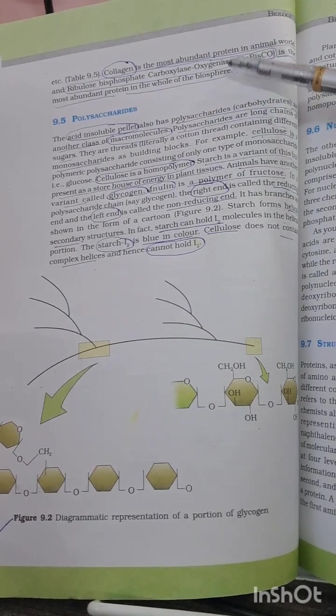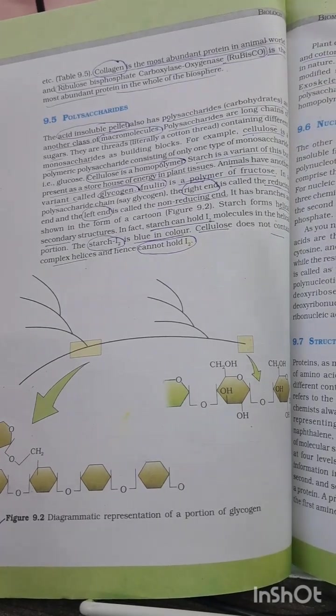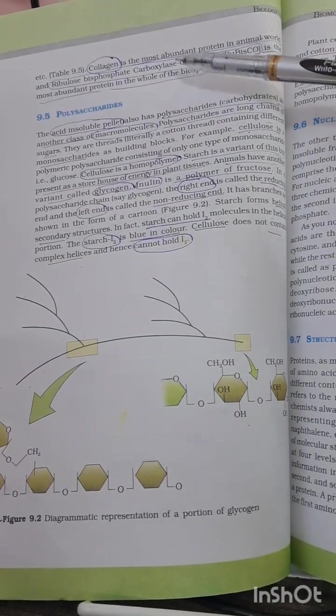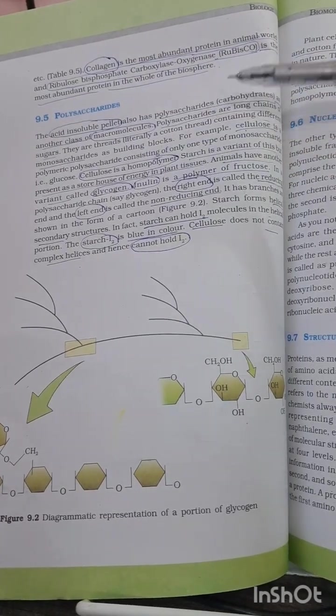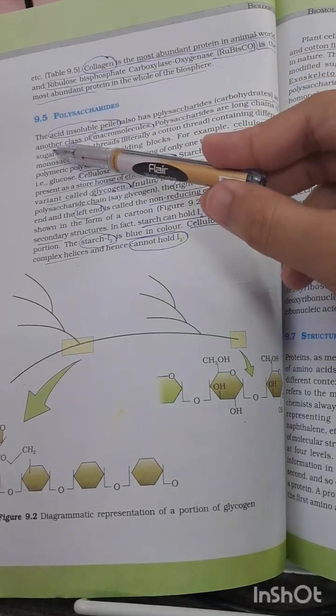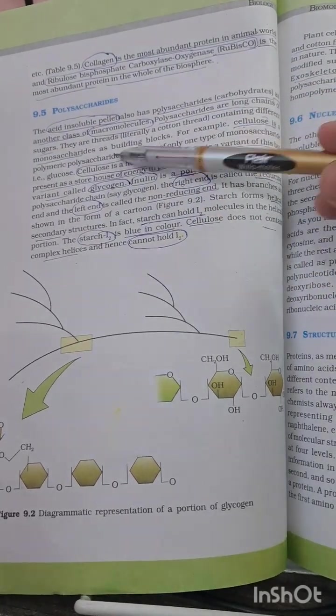Now coming to polysaccharides, they are found in acid insoluble pellet. As I mentioned in earlier videos, acid insoluble pellets are macromolecules. Polysaccharides are long chains of sugar, that is monosaccharides are the building blocks. You have to remember this as well.